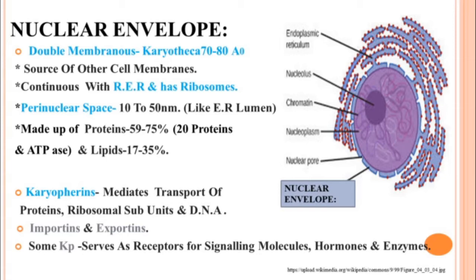First, the nuclear envelope. It is a double membrane structure; each membrane resembles the plasma membrane in its chemical composition. It is also known as karyotheca and measures about 70 to 80 angstrom units. It is the source of all other cell organelle membranes and is continuous with the RER. The outer nuclear membrane is continuous with the RER and has ribosomes, so it has the ability to produce proteins. The space between the two nuclear membranes is called the perinuclear space, measuring about 10 to 50 nanometers. The nuclear membrane is made up of 59 to 75 percent proteins, carries nearly 20 proteins including ATPase as an important enzyme.